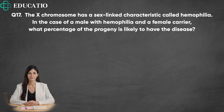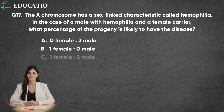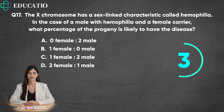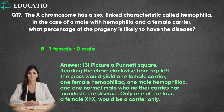Question 17. The X chromosome has a sex-linked characteristic called hemophilia. In the case of a male with hemophilia and a female carrier, what percentage of the progeny is likely to have the disease? A. Zero female, two male. B. One female, zero male. C. One female, two male. D. Two female, one male. Answer: B. Picture a Punnett square. Reading the chart clockwise from top left, the cross would yield one female carrier, one female hemophiliac, one male hemophiliac, and one normal male who neither carries nor manifests the disease. Only one of the four, a female XHX, would be a carrier only.